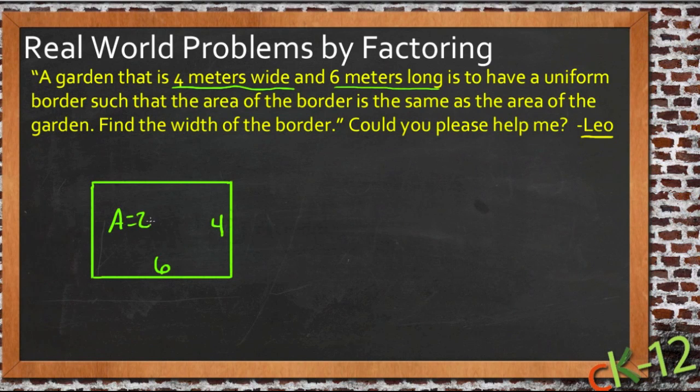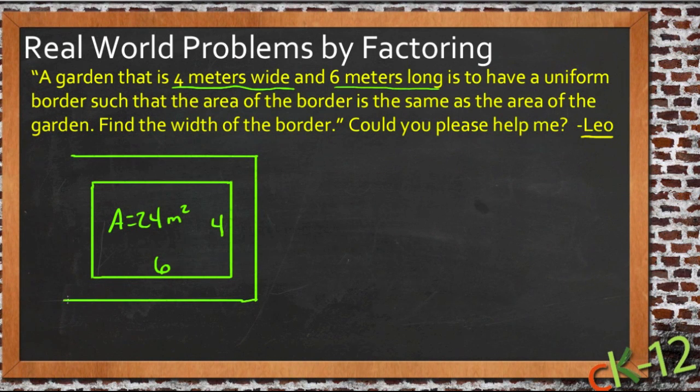So the area of the garden itself is 24 square meters. Then he says it has to have a uniform border, so a uniform border means the border is going to be the same width all the way around. When we're done, the garden—the overall plot—will be bigger than it is now, and if that border is uniform, then that extra width is going to be the same all the way around.